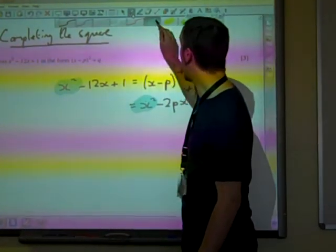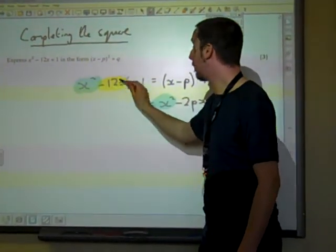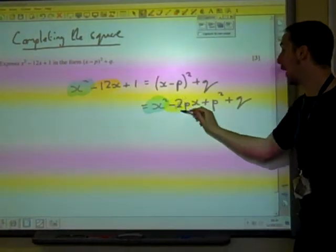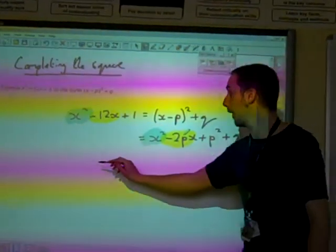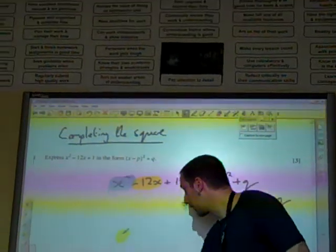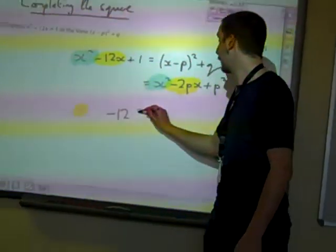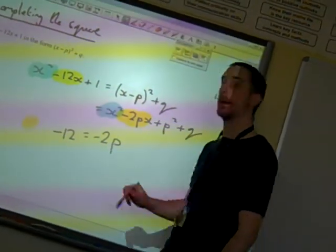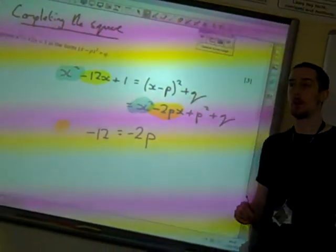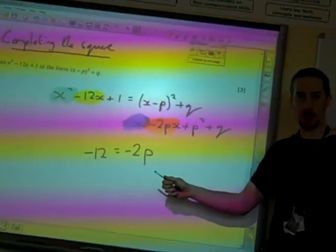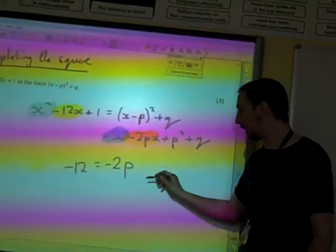If we compare the x's, we've got -12x over there and -2px over there. So when we compare that, we're going to say that -12 equals -2p. If -12 equals -2p, then p must equal...